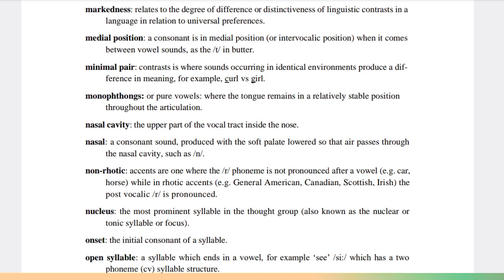versus girl. Monophthongs or pure vowels: where the tongue remains in a relatively stable position throughout the articulation. Nasal cavity: the upper part of the vocal tract inside the nose. Nasal: a consonant sound produced with the soft palate lowered so that air passes through the nasal cavity, such as in m or n.